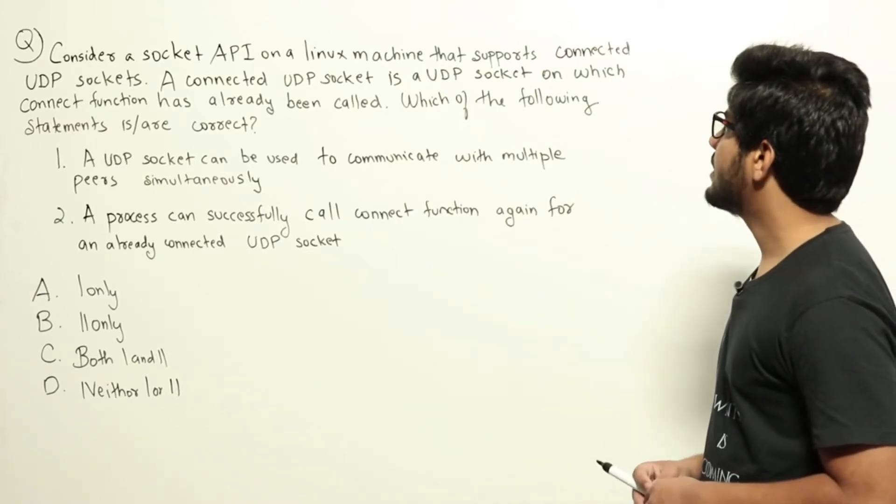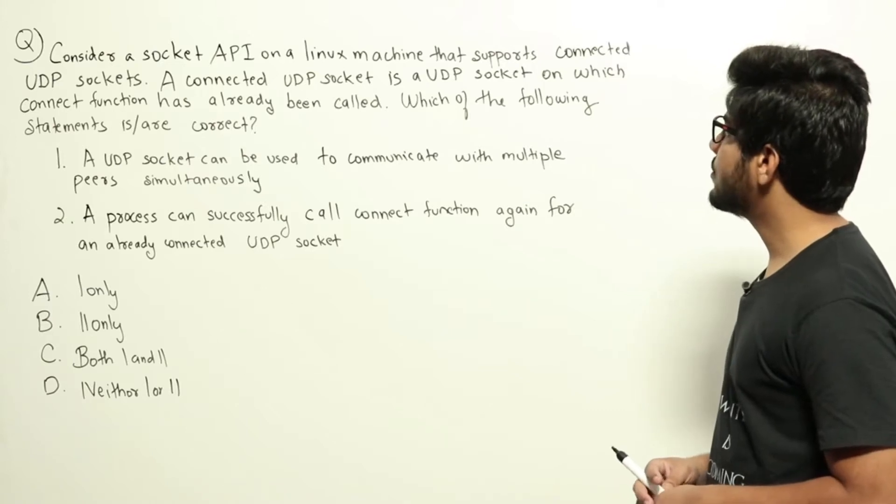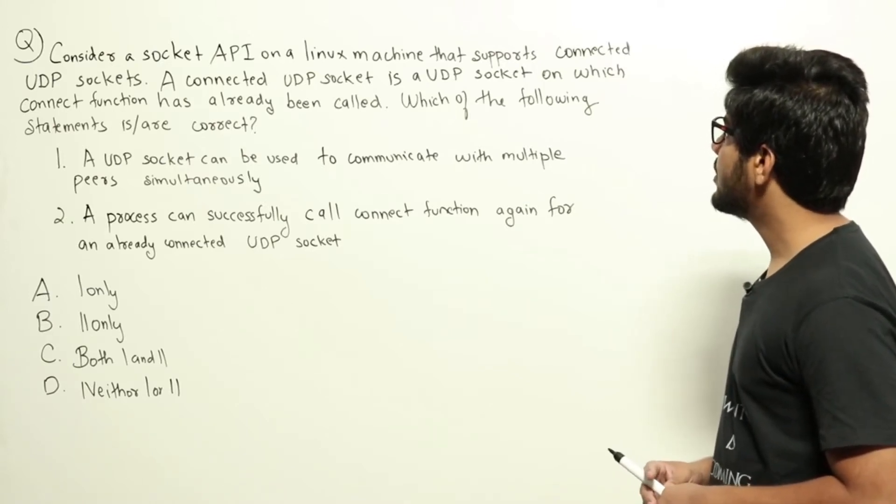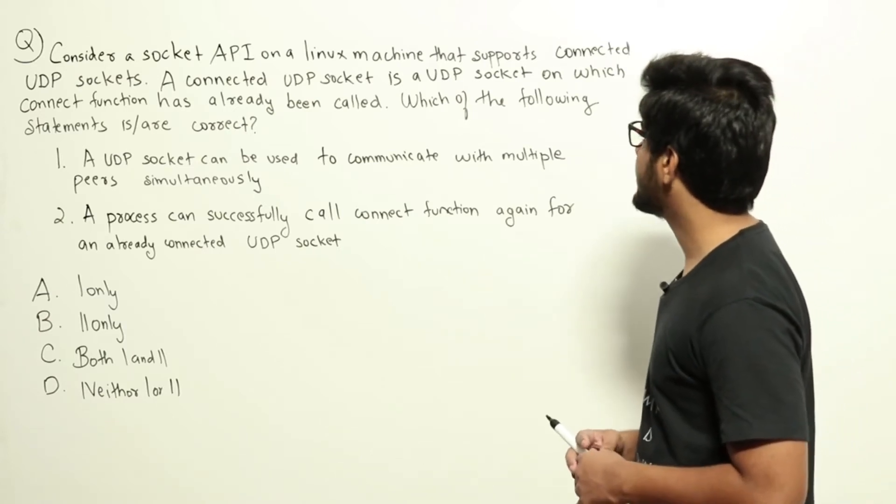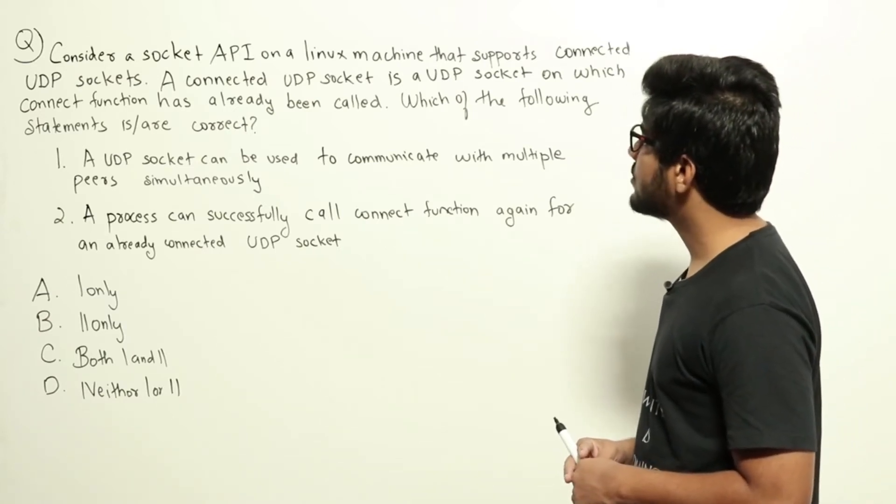Consider a socket API on a Linux machine that supports connected UDP sockets. A connected UDP socket is a UDP socket on which connect function has already been called. Which of the following statements is or are correct?